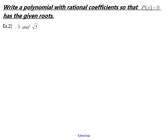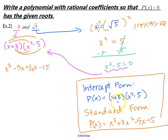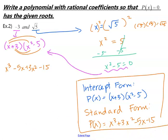I want you to try this example on your own. Think about everything we've done up to this point. Pause, try to work it out, and write the equation in both intercept and standard form, then check back with me. Hopefully you got p of x equals x plus 3 times x squared minus 5 as your intercept form, and standard form is p of x equals x cubed plus 3x squared minus 5x minus 15. If you didn't get those, pause and check your work to see where you might have made a mistake.